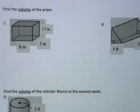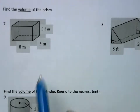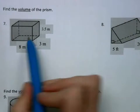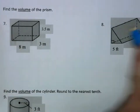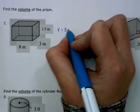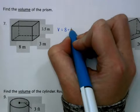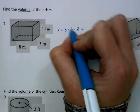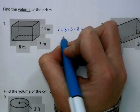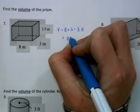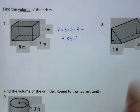Next up we have volume. For a rectangular prism like this, the volume is just length times width times height. Multiplying those three numbers together, we get 84 meters cubed.